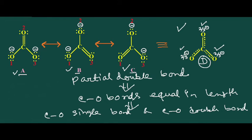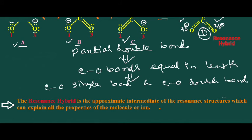The definition of resonance hybrid is: the resonance hybrid is the approximate intermediate of the resonance structures, which can explain all the properties of the molecule or ion.